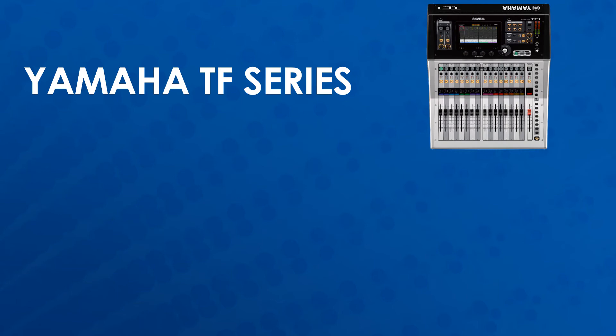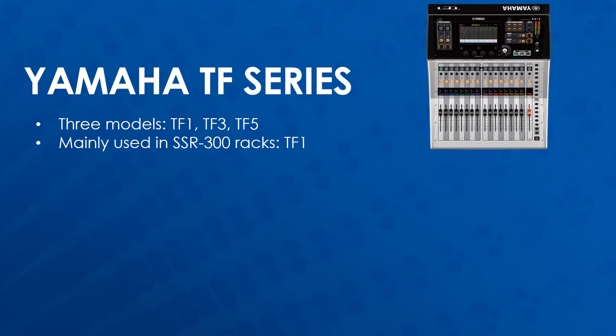The Yamaha TF series has three mixers in its lineup: the TF1, the TF3, and the TF5. All three function identically, with the only difference being the number of channels available. The most common one found in Daktronics systems is the TF1, which is mainly used in the SSR300 racks.